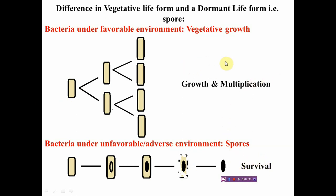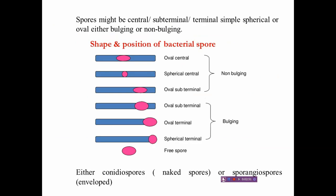Bacterial vegetative growth occurs when cells are in a favorable environment full of nourishment and moisture. There are several types of spores based on position: central spores, sub-terminal spores, and terminal spores. Based on shape, spores can be oval or spherical.